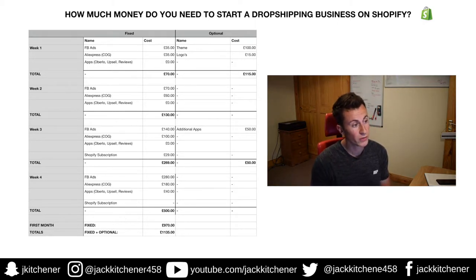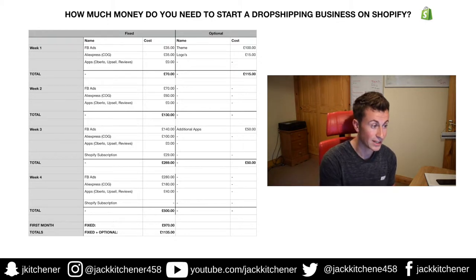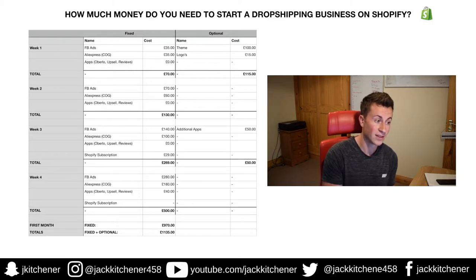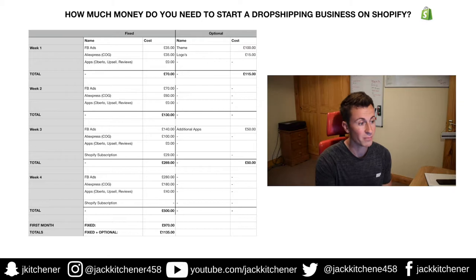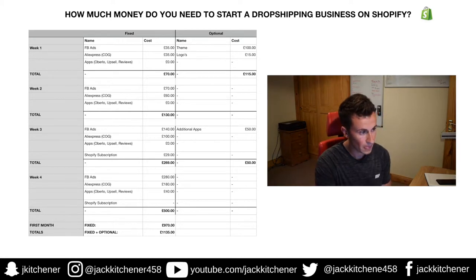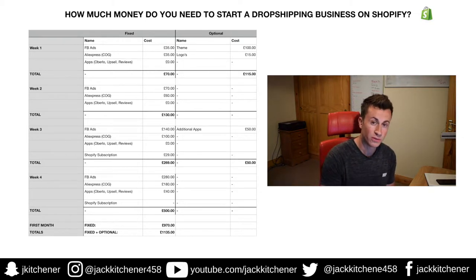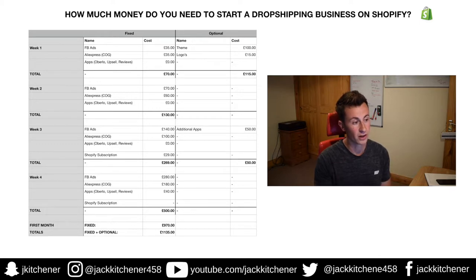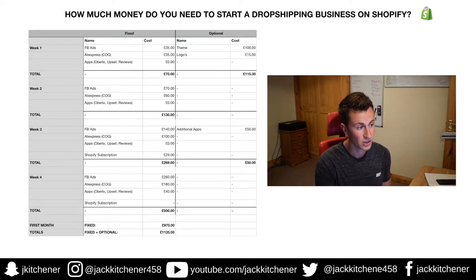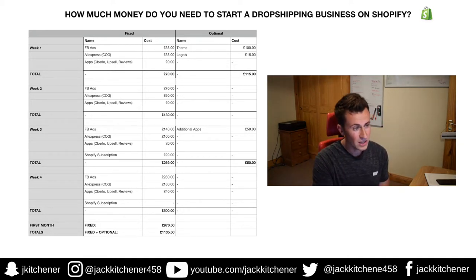Week one: spending £5 a day on Facebook ads brings the total ad cost to £35. Based on a 30/30/30 rule — 30% on ads, 30% on cost of goods, 30% profit — that's another £35 on AliExpress orders. For apps, I'll link to my must-have apps video; they all come with a free trial period, and in week one you won't reach any thresholds, so no app costs. Total for week one: £70.